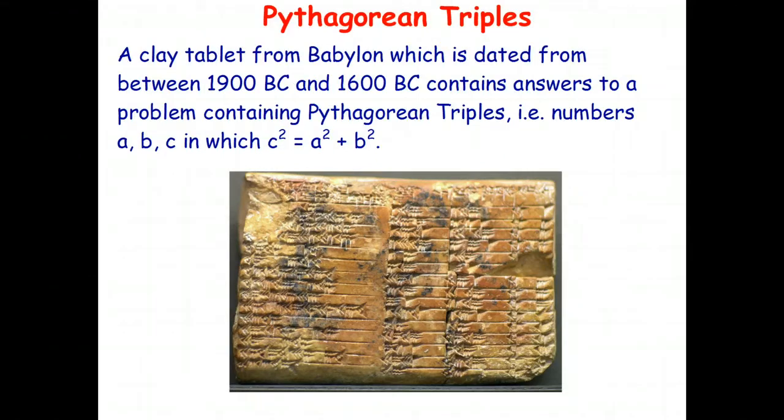Now one interesting fact about Pythagorean triples is that they've been known about for a long time. This picture here is of a clay tablet from Babylon dated back to somewhere between 1900 BC and 1600 BC. So you're talking three and a half thousand to four thousand years ago. Humans knew about Pythagorean triples.